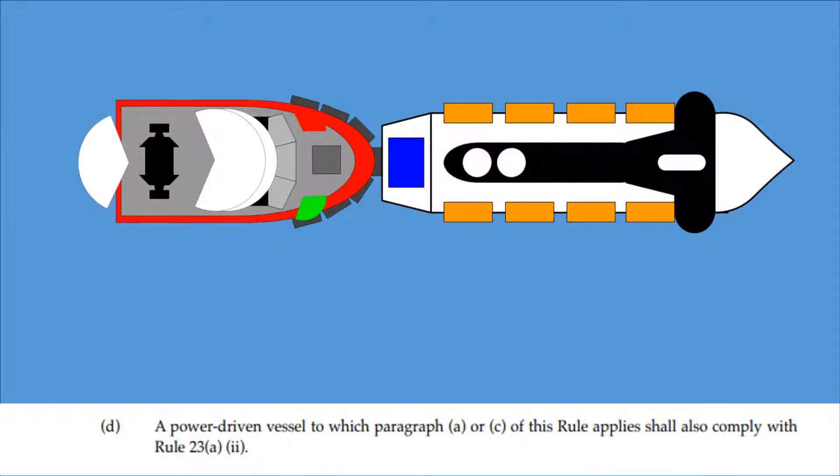A power-driven vessel to which paragraph A or C of this rule applies shall also comply with Rule 23A Part 2. Rule 23A Part 2 says that if a vessel is over 50 meters in length, it will have a second additional masthead light to show its length.